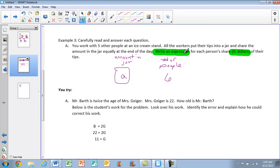Now I have to think of the operation. I have to write an expression. So out of those four operations, which one is going to be? All the workers put their tips into the jar and share it equally. So I'm going to have to take all that money and divide it up by six people. So this is my expression, A divided by 6.